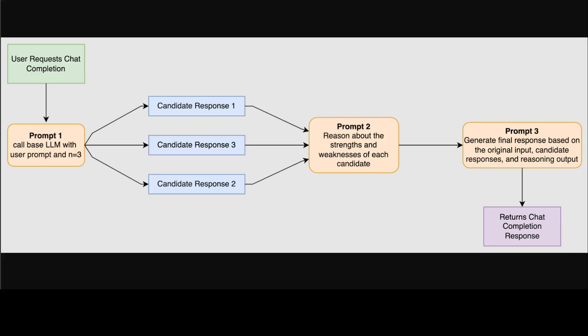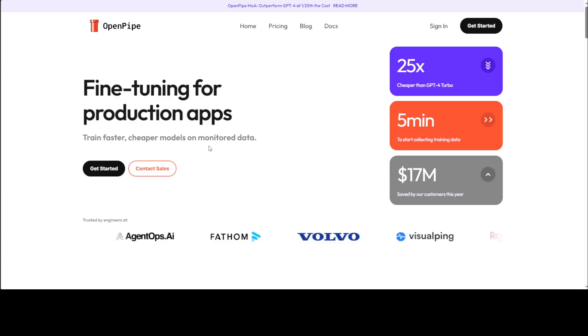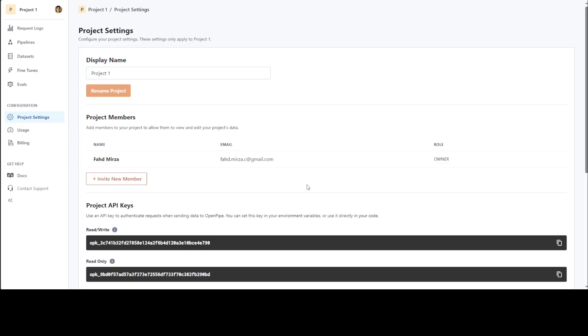Now just to show you if you want to do something with this OpenPipe, this primarily seems like some fine-tuning website with a paid option where you can do the fine-tuning of your production apps. They say that you can train faster, cheaper models. I haven't used it so I'm not sure, but seems quite good to me.